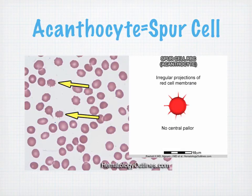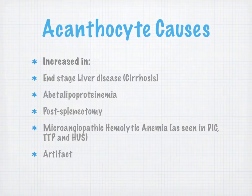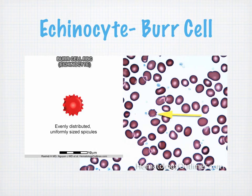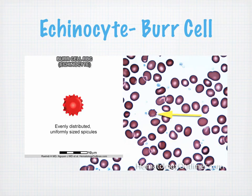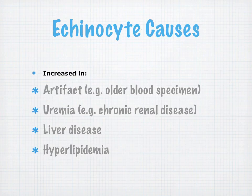Acanthocytes, often called spur cells, are increased in end-stage liver disease and post-splenectomy, and could be an artifact. Next is the echinocyte, or burr cell — similar looking with no central pallor and irregular projections of the red cell membrane, with evenly distributed uniform-sized spicules. Echinocyte causes include artifact (old specimen), chronic renal disease, liver disease, and hyperlipidemia.